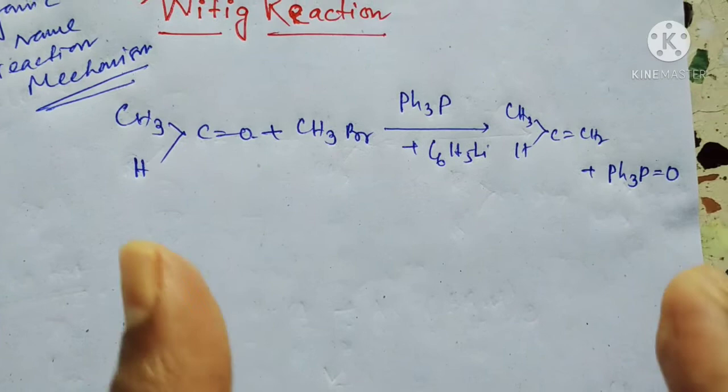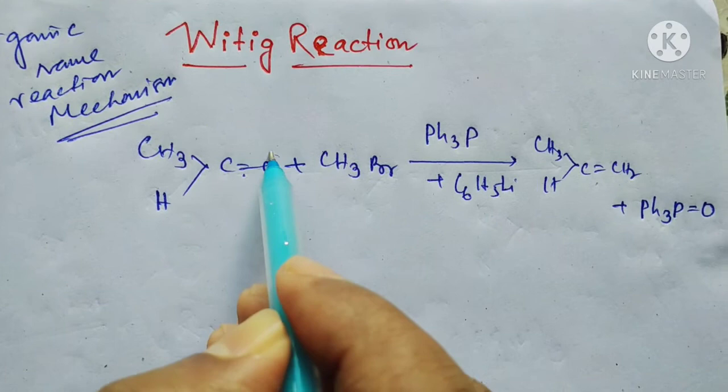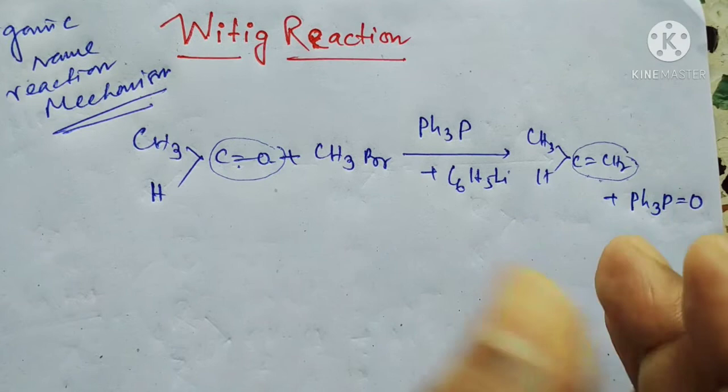The main reaction is that this double bond doesn't change. Instead of C=O, there will be C=CH2. This is the main outcome of the Wittig reaction.